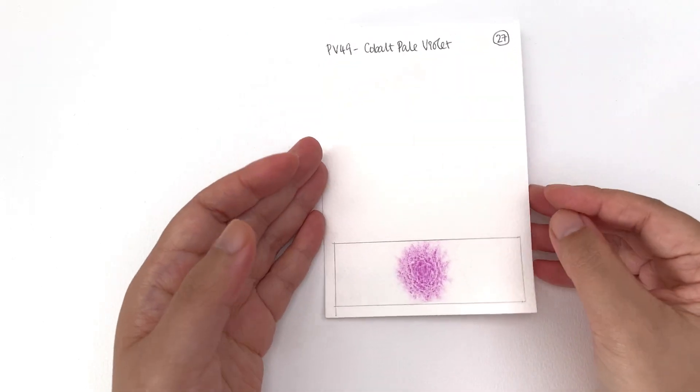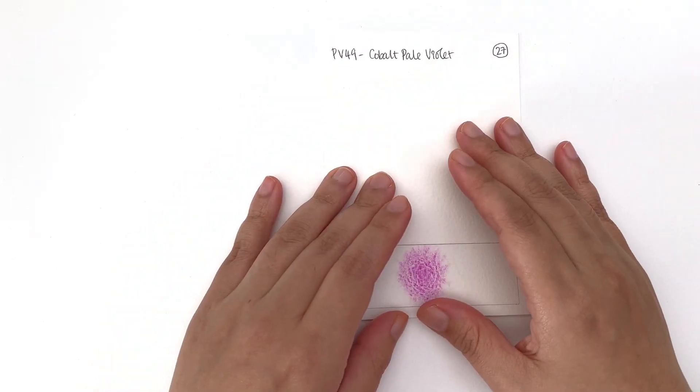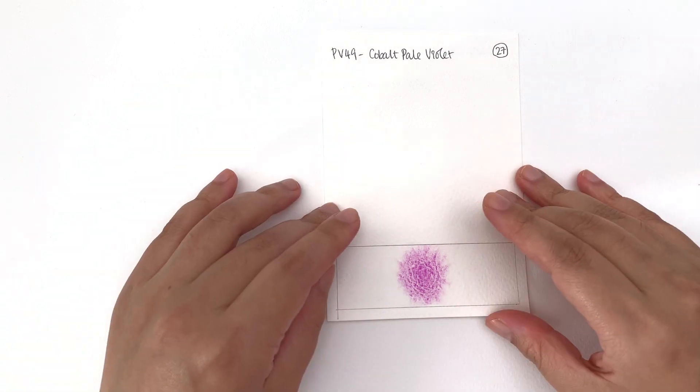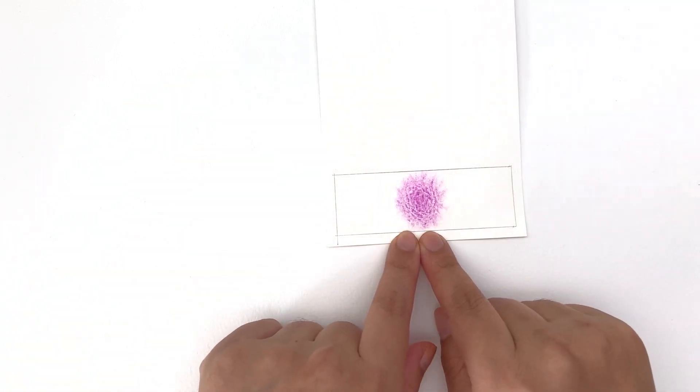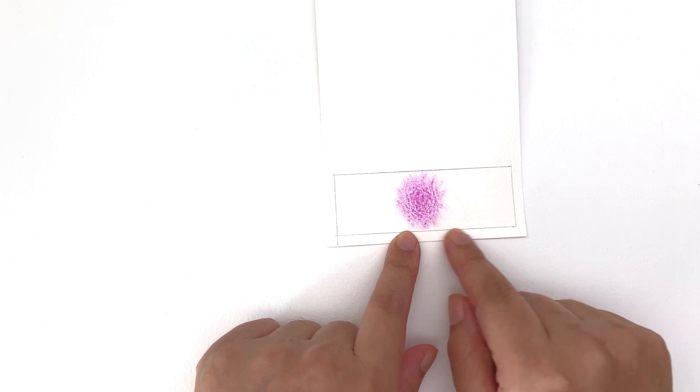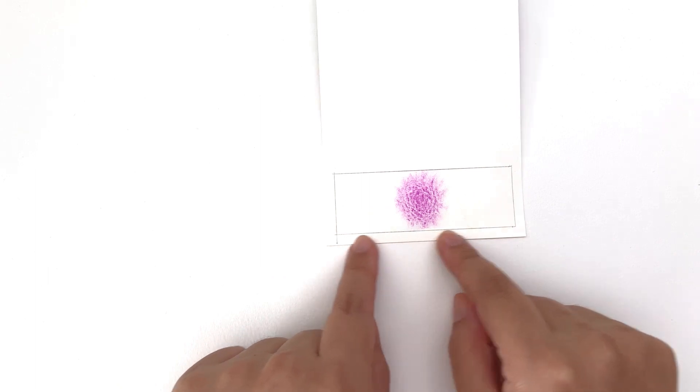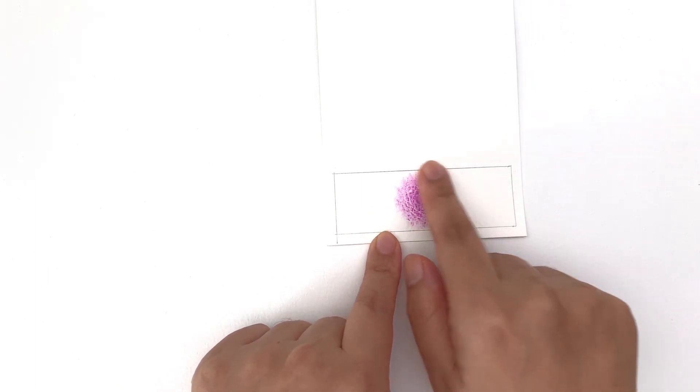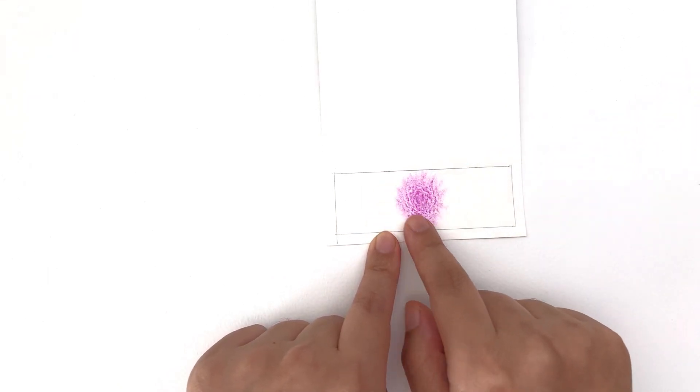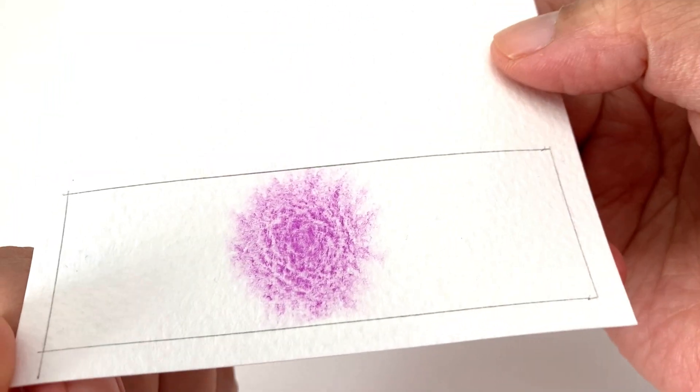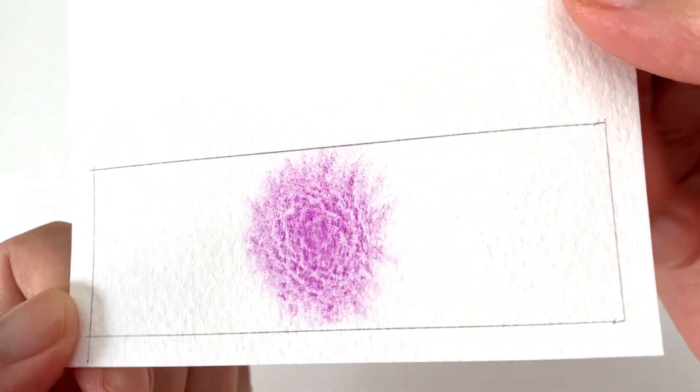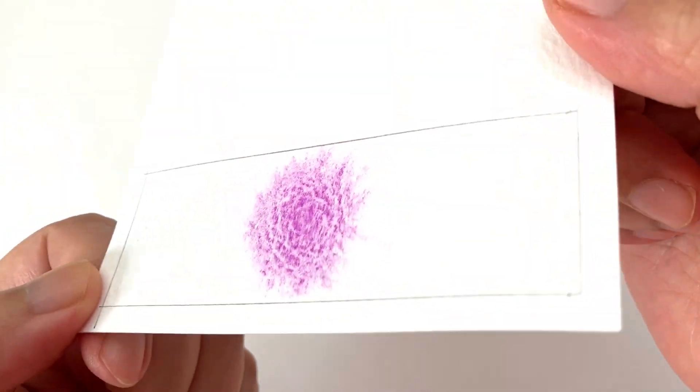This is made of PV49 which is cobalt pale violet, very appropriate for a cobalt violet light. For the dispersion, it doesn't disperse as much because cobalts are very heavy pigment so it's going to struggle to spread out. However, I think this is a beautiful pattern. You get heavy granulation. It's almost like a flower on its own. Do you see how beautiful that is? That is stunning.